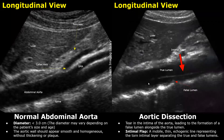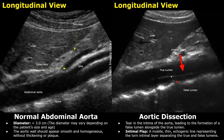Aortic dissection is the tearing of the intimal layer of the aorta — the innermost layer — which forms a false lumen within the vessel. Only the inner layer is torn and it starts floating into the lumen. This mobile, thin, echogenic line is called the intimal flap. The area under the flap is the false lumen, and the larger area above the flap is the true lumen, the actual lumen of the aorta. Usually the false lumen is smaller than the true lumen.